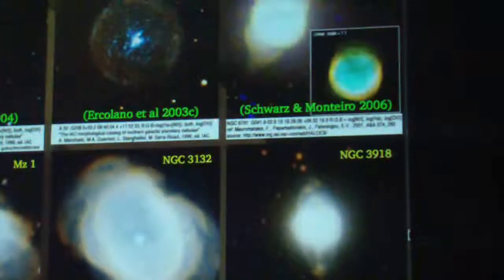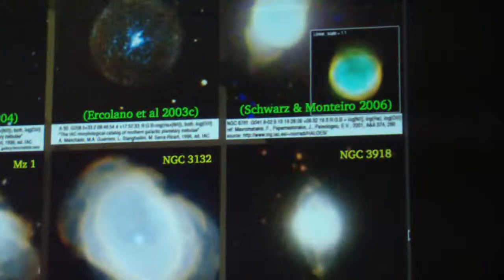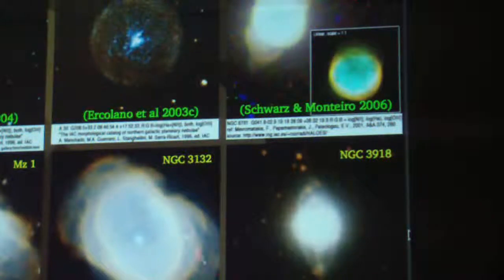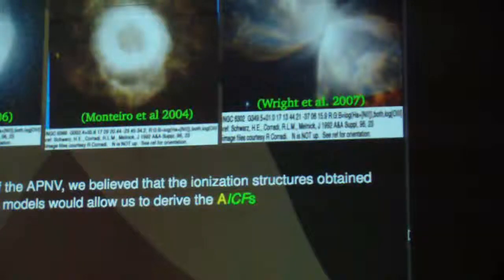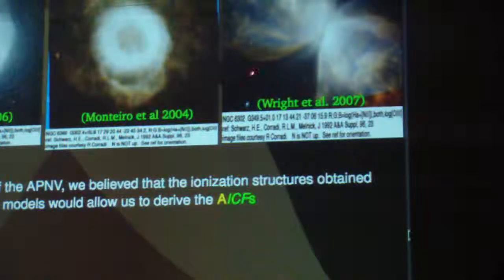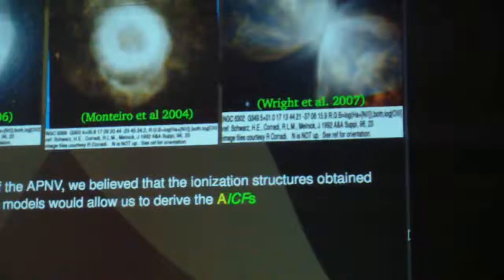What I am showing here is a number of imaging observations of planetary nebulae, all of which were modeled in a 3D fashion by different models. You see that you have round ones, elliptical ones, and also bipolar ones. The idea was that you could take the intrinsic structures from these models and derive a set of axisymmetric ICF schemes to solve this problem.